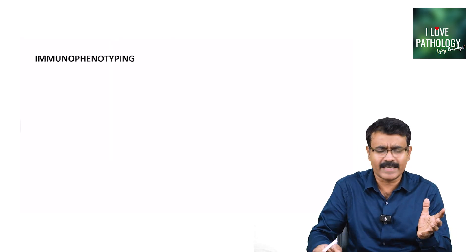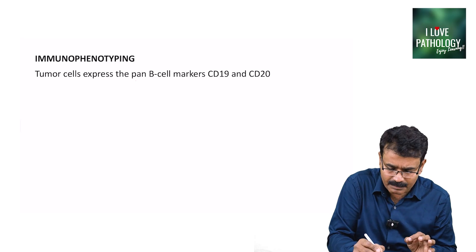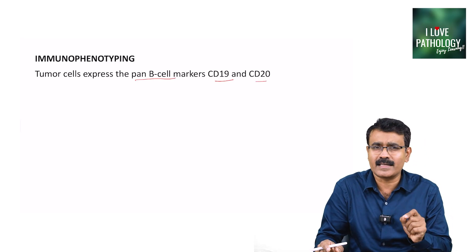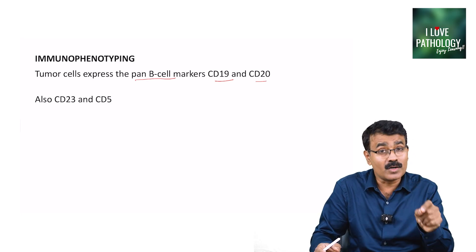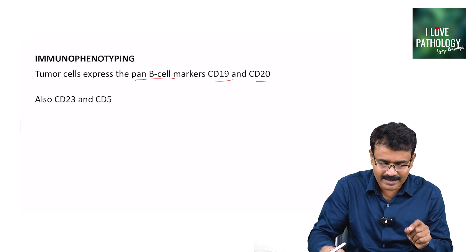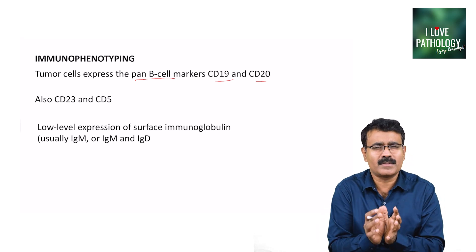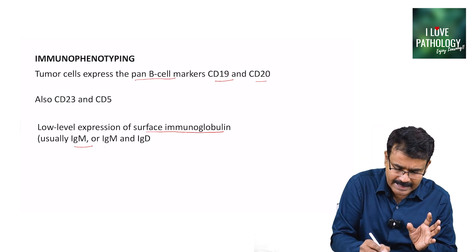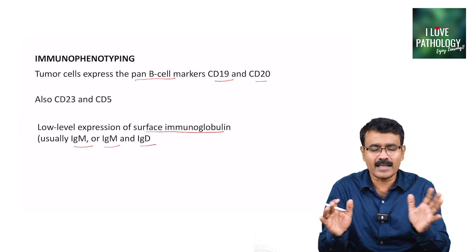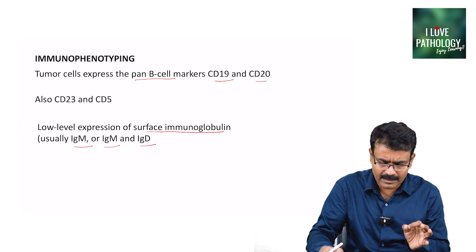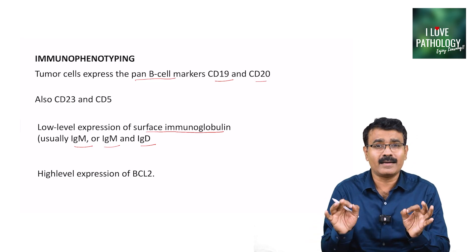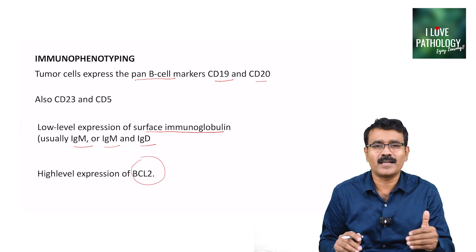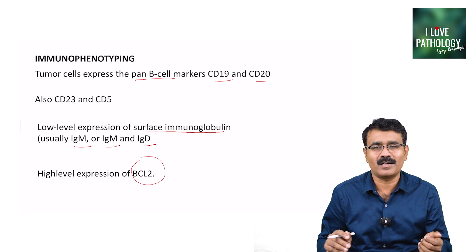Immunophenotyping confirms the diagnosis. Tumor cells express the pan-B cell markers CD19 and CD20, and also show expression of CD23 and CD5. There will be low-level expression of surface immunoglobulin, usually IgM but can also be IgD or IgG. There can be high-level expression of BCL-2. This is what you find in immunophenotyping of CLL or SLL.